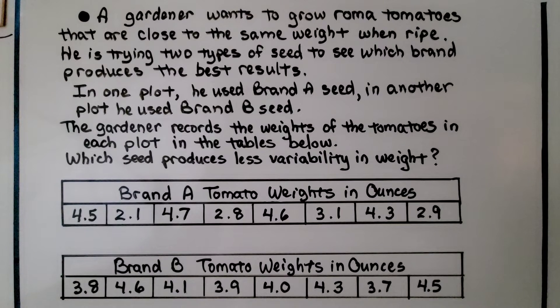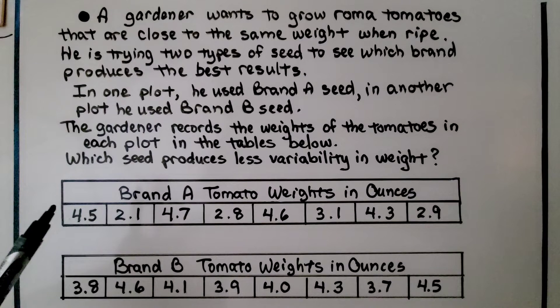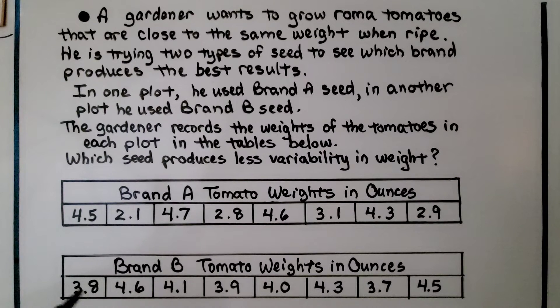A gardener wants to grow Roma tomatoes that are close to the same weight when ripe. He's trying two types of seed to see which brand produces the best results. In one plot he used brand A seed, and in another plot he used brand B seed. The gardener records the weights of the tomatoes in each plot in the tables below. Which seed produces less variability in weight? That means which brand seed had the tomatoes, when ripe, all about the same weight?